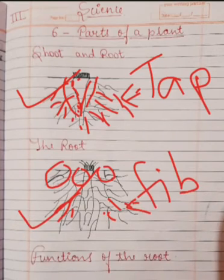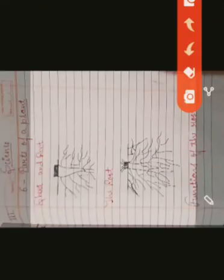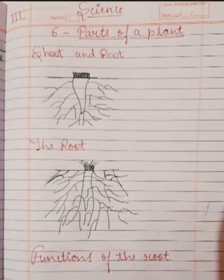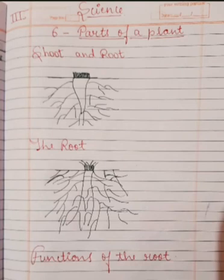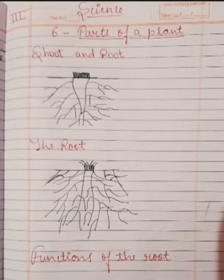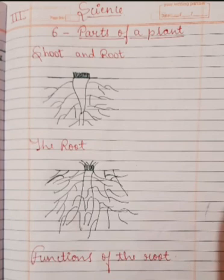Now let's talk about the functions of the root. A plant cannot remain fixed in the soil without roots, so the root fixes the plant in the soil. Without roots, a plant would not be able to take in water or salts from the soil and would die. Some vegetables like carrots, radish, and beetroot have thick roots that store food, which is used by the plant — and we eat the roots of such plants.